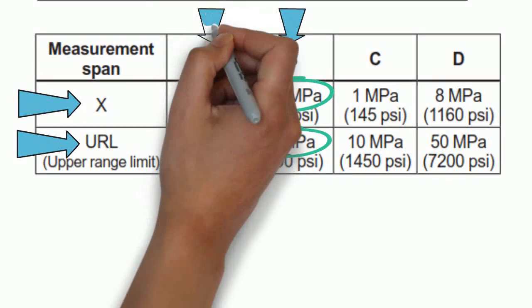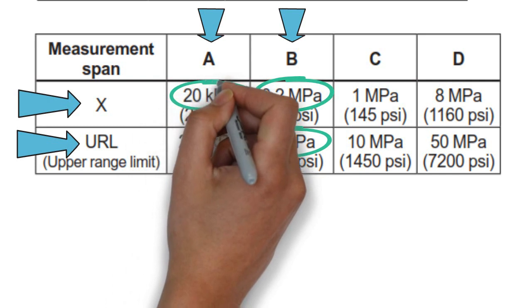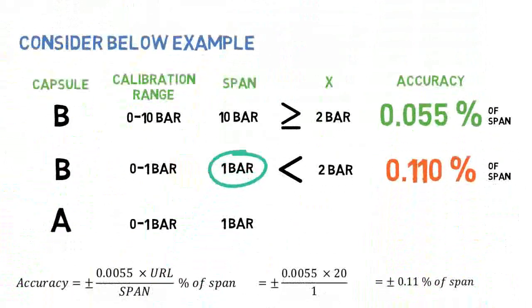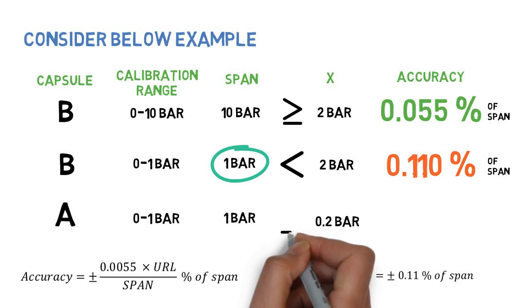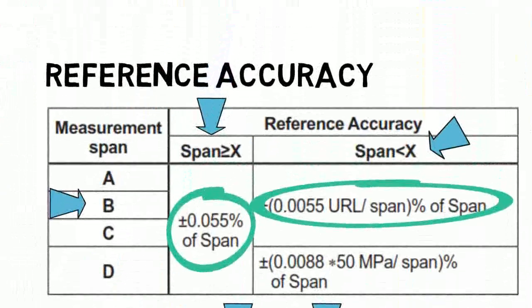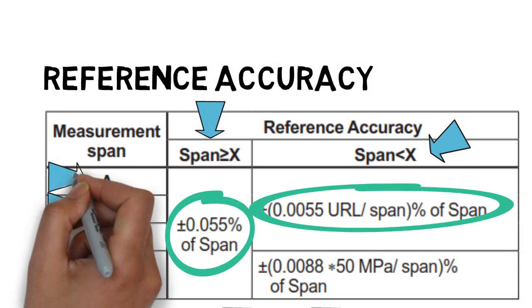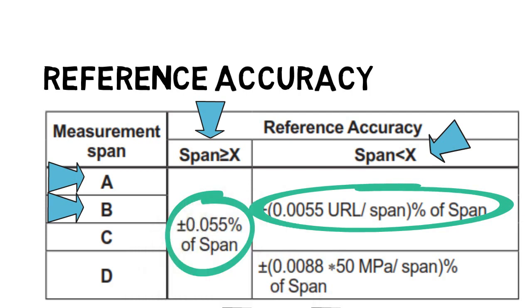URL for capsule A shall be 20 kPa or 0.2 bar. Span is greater than X. When span is greater than X for capsule A, accuracy shall be plus or minus 0.055% of span.